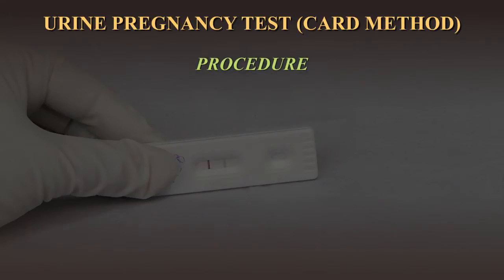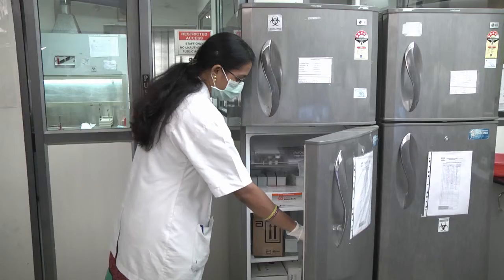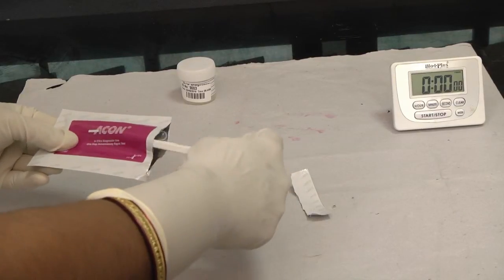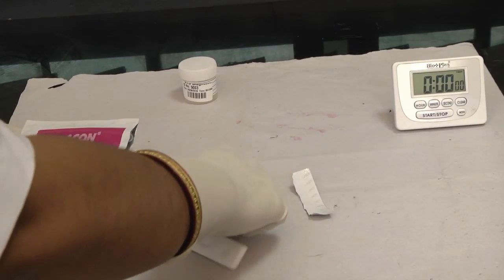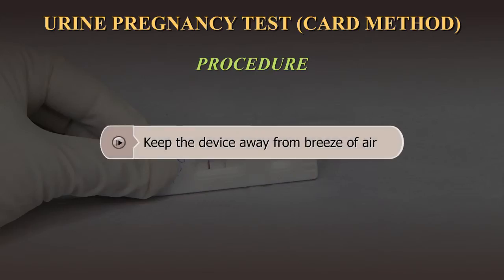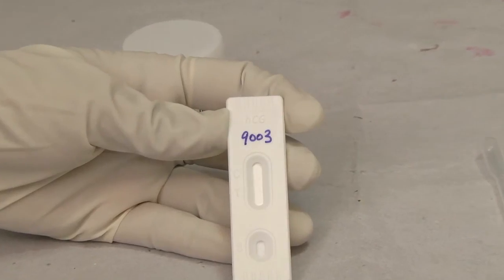Procedure: Follow standard precautions while performing the test. Remove the kit from the refrigerator and take out the test device from the pouch, bringing it to room temperature. Do not keep it open for a long period of time. The test device has a circular sample window and a result window marked C for the control region and T for the test region. Keep the test device on a flat surface, away from fan, dryer, or breeze of air, and label it with the patient ID.